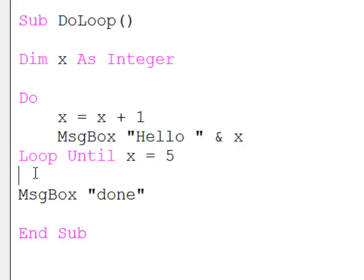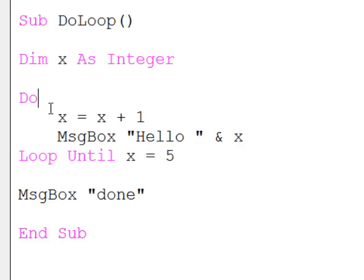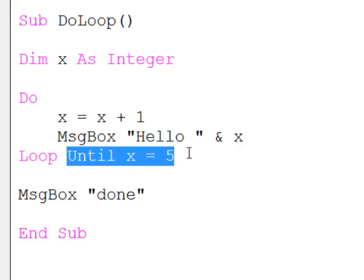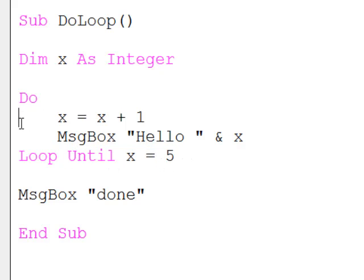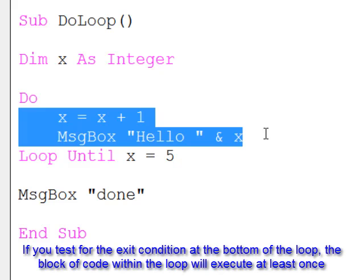There's a subtle difference between performing the test down here as opposed to up here. If I perform the test at the bottom of the loop, these two lines of code must execute at least once, no matter what.